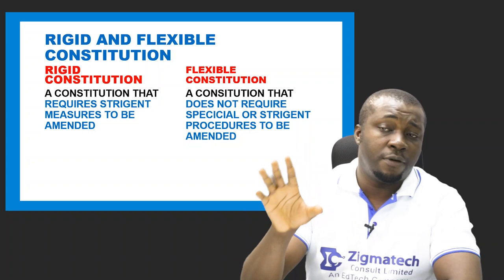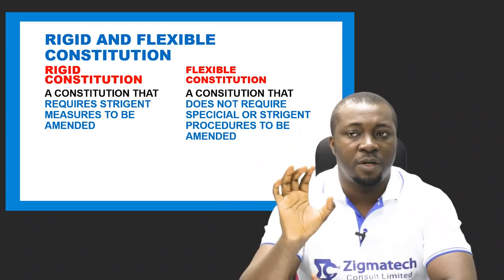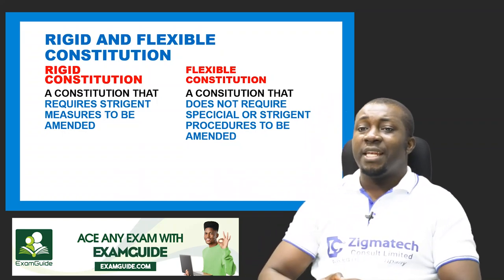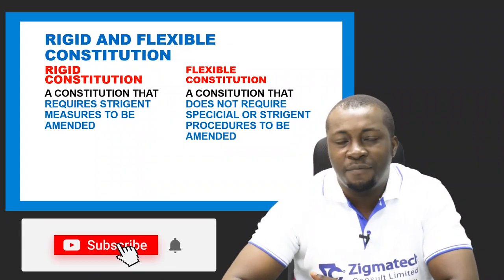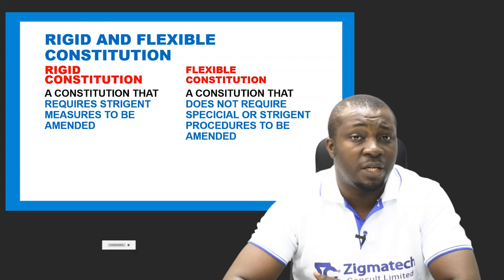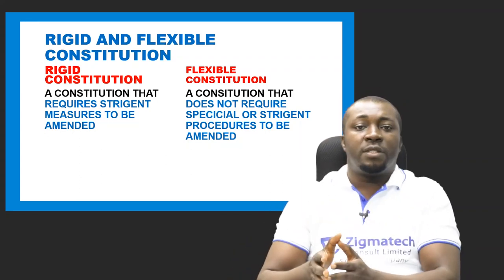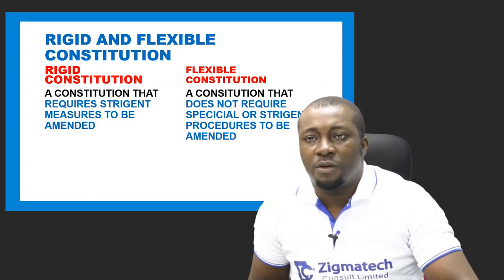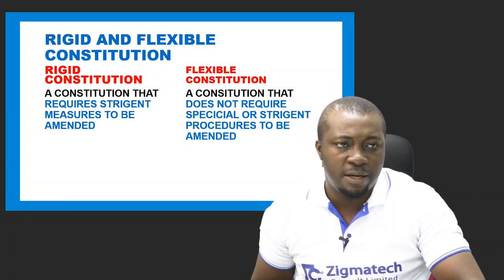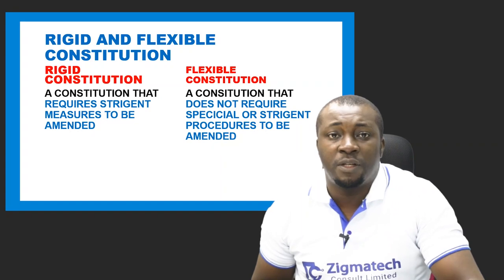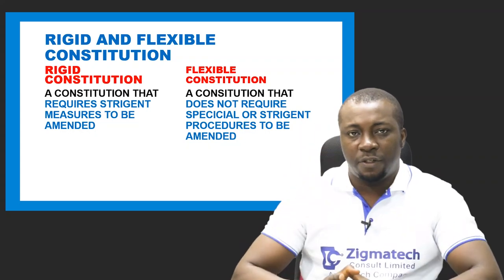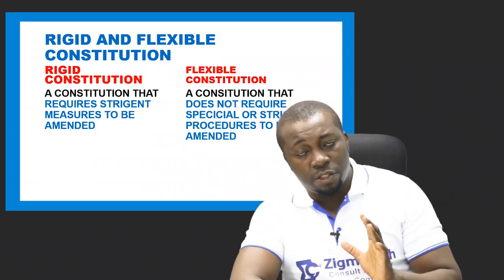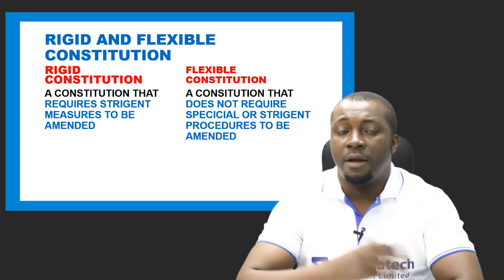The opposite of a rigid constitution is the flexible constitution — a constitution that does not require a special or stringent procedure to be amended. It can be easily amended using the same process as making ordinary laws. Every flexible constitution is unwritten. Countries that practice this include Ghana, United Kingdom, and Israel, which are unitary states. A flexible constitution has all the features, advantages, and disadvantages of an unwritten constitution, while a rigid constitution has those of a written constitution.